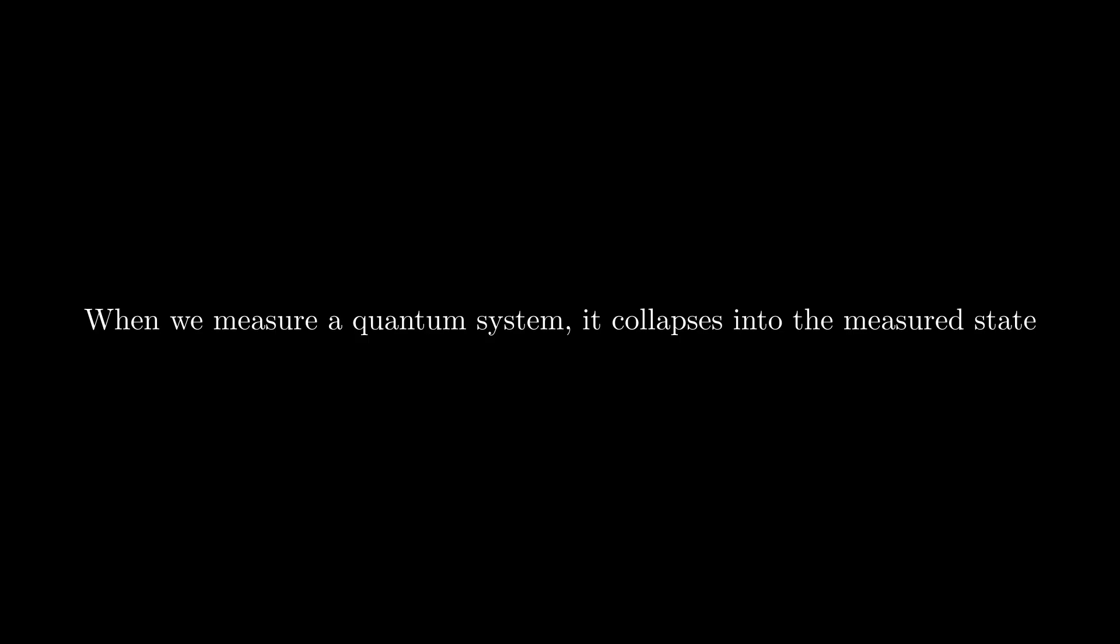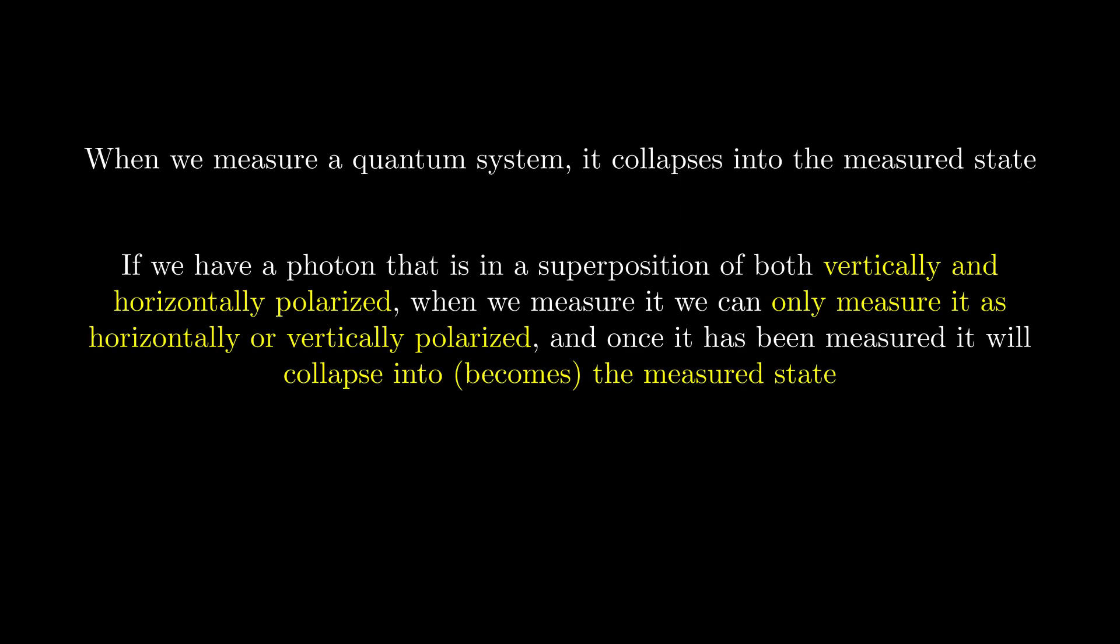If we go back to our photon polarization example, if the photon is in a superposition of both horizontally and vertically polarized, then when we measure it, we will only measure it as one or the other, but not both. And once it has been measured, it collapses into the state we measured.